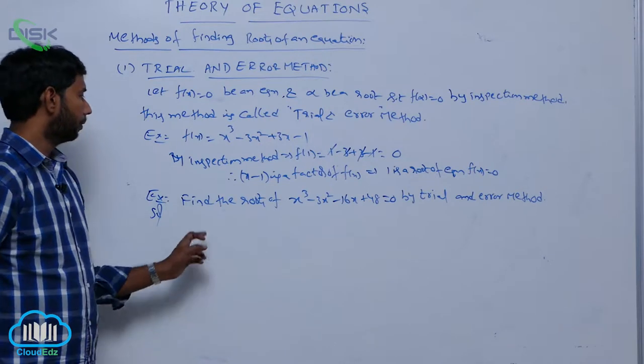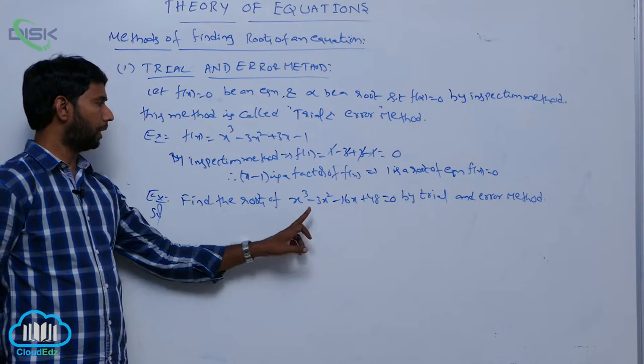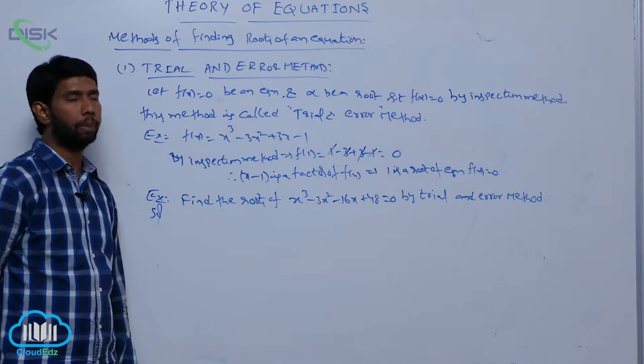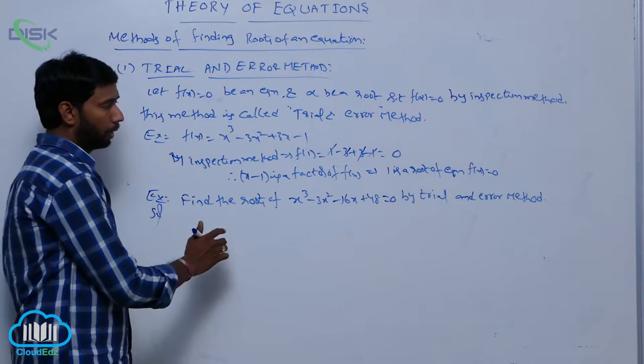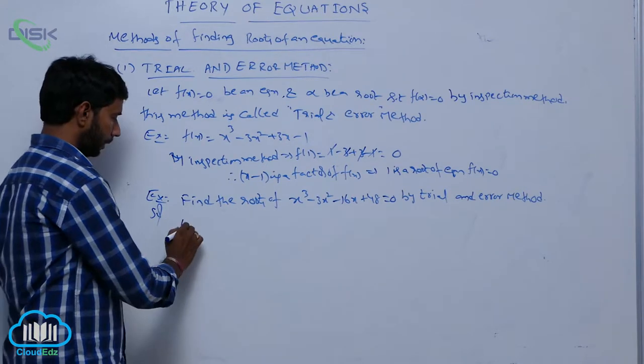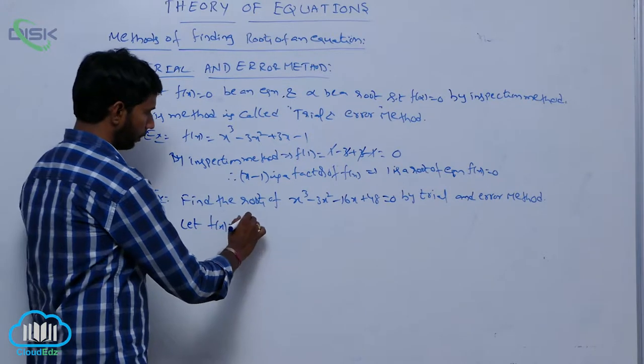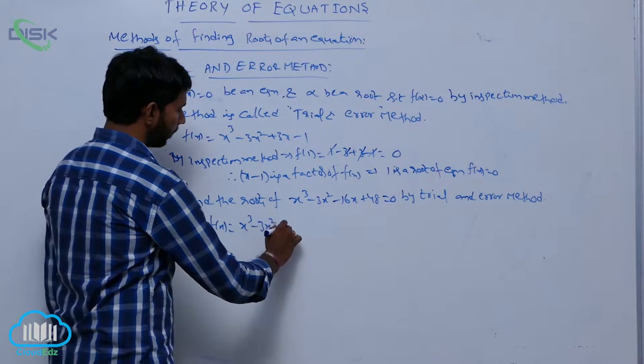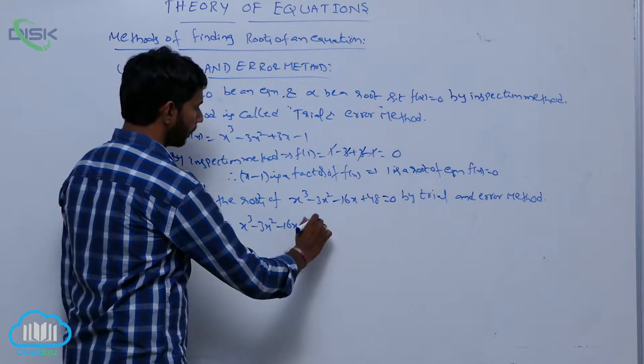Example about trial and error method. Find the roots of equation x³ - 3x² - 16x + 48 = 0 by using trial and error method. Let f(x) = x³ - 3x² - 16x + 48.